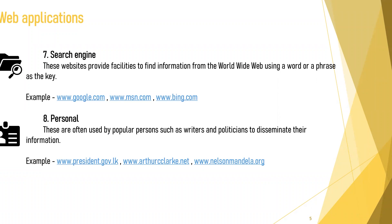Then we have personal websites. These are often used by popular persons such as writers and politicians to disseminate their information. For example, President.gov for the Sri Lankan president, ArthurCClarke.net, and NelsonMandela.org. These are for giving out personal information about a politician, writer, or other popular person.